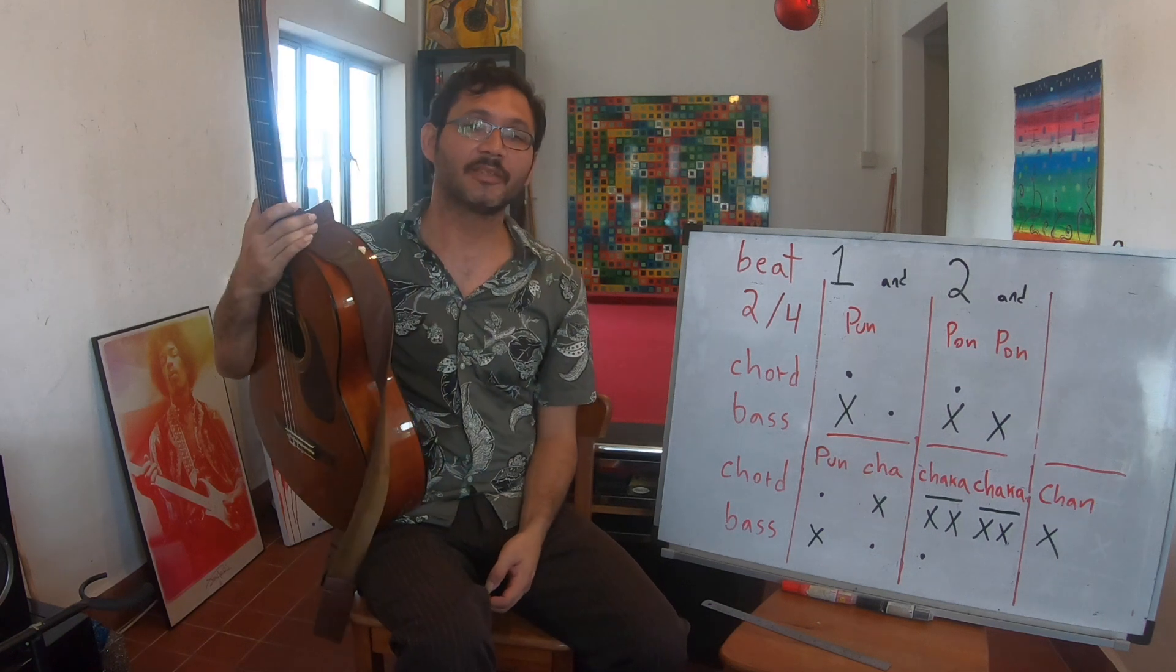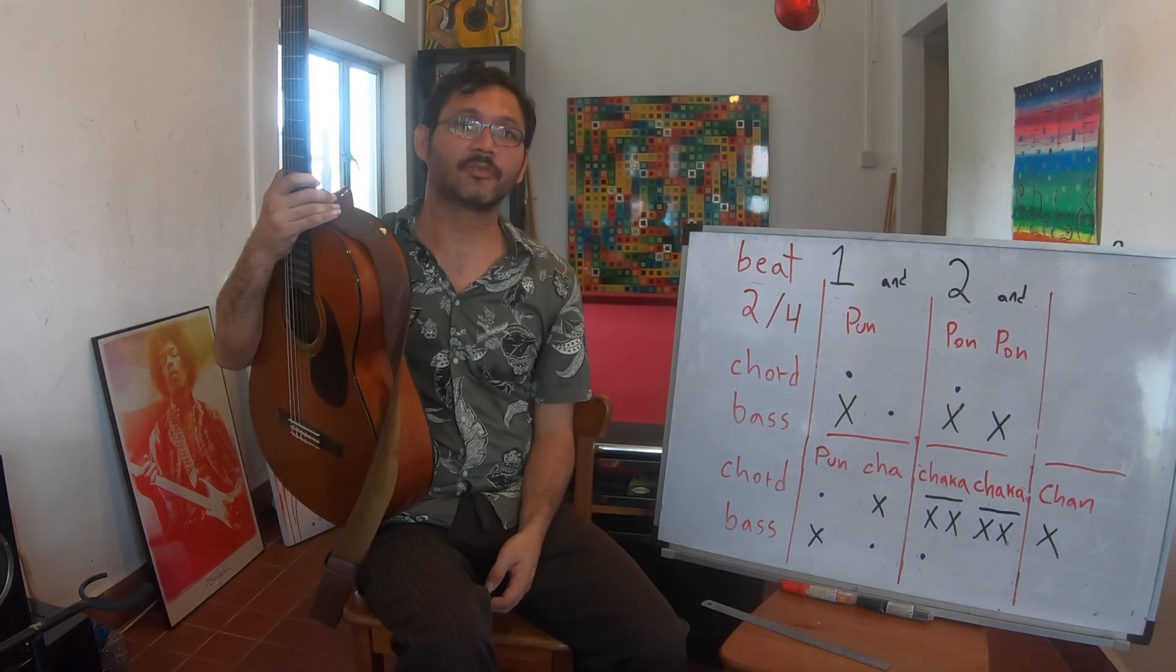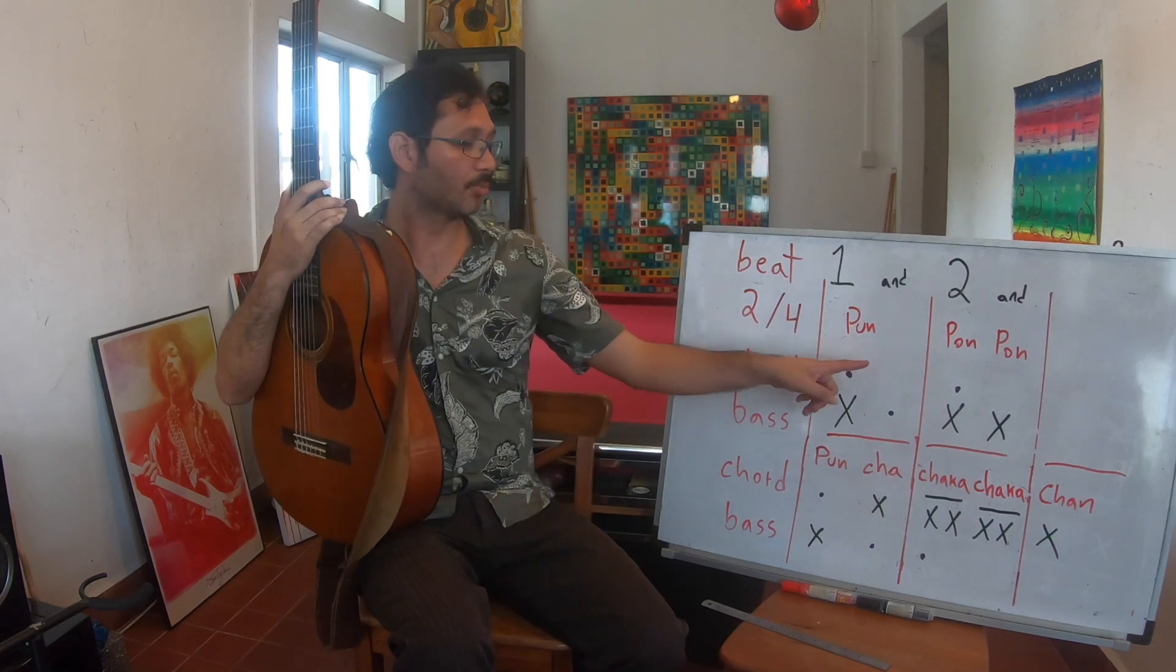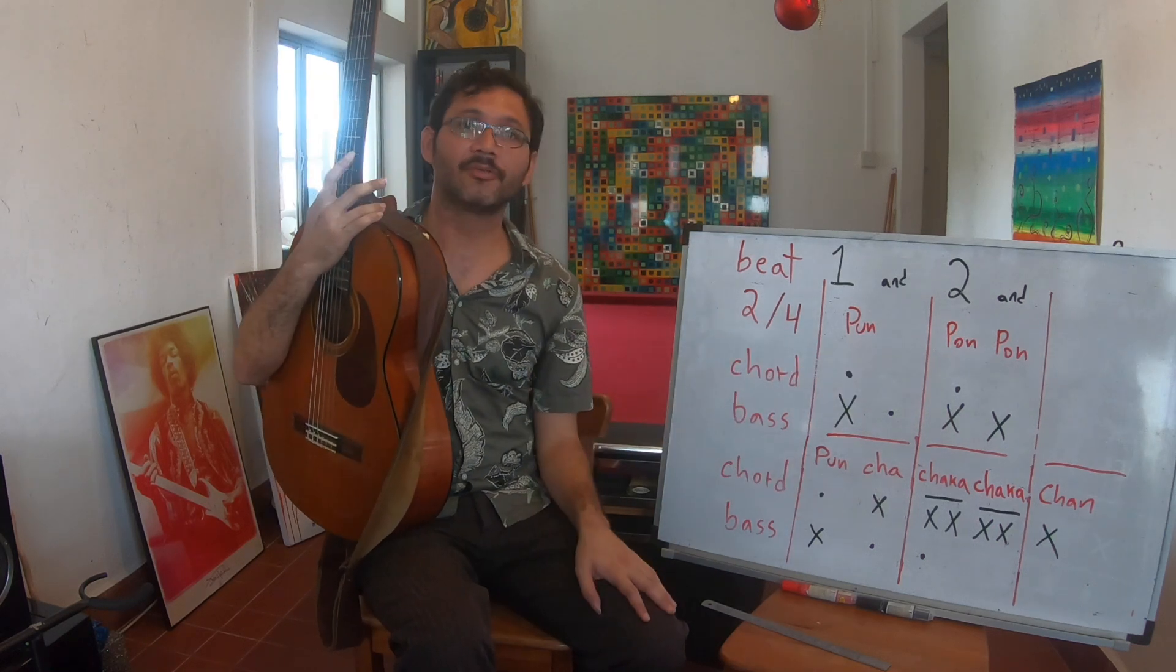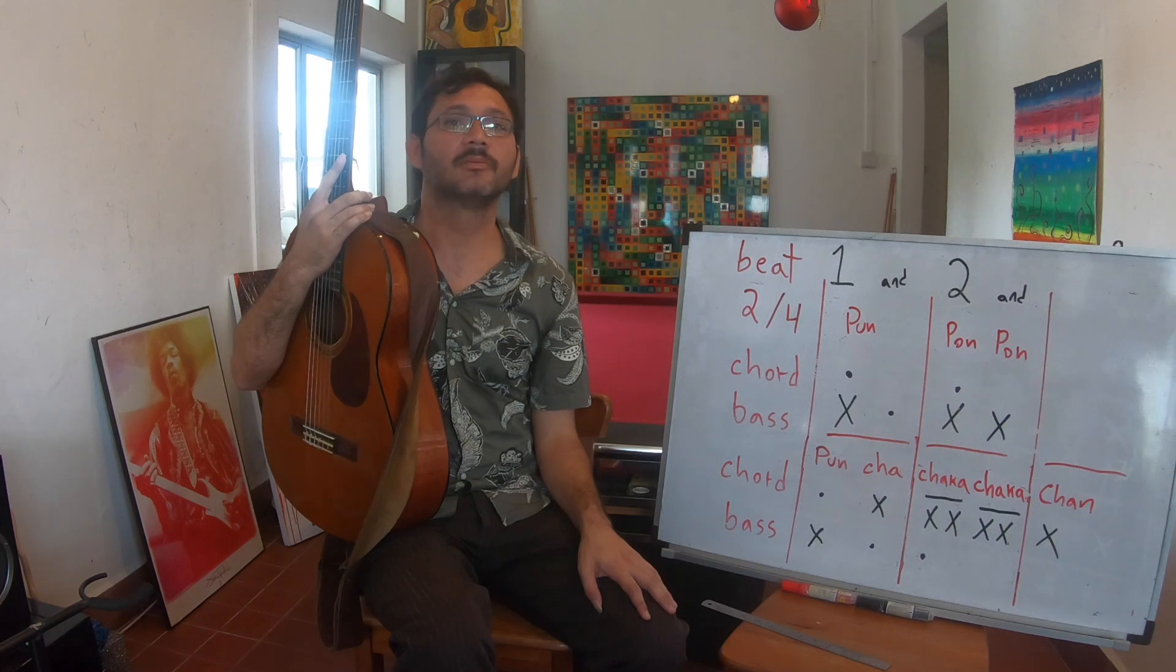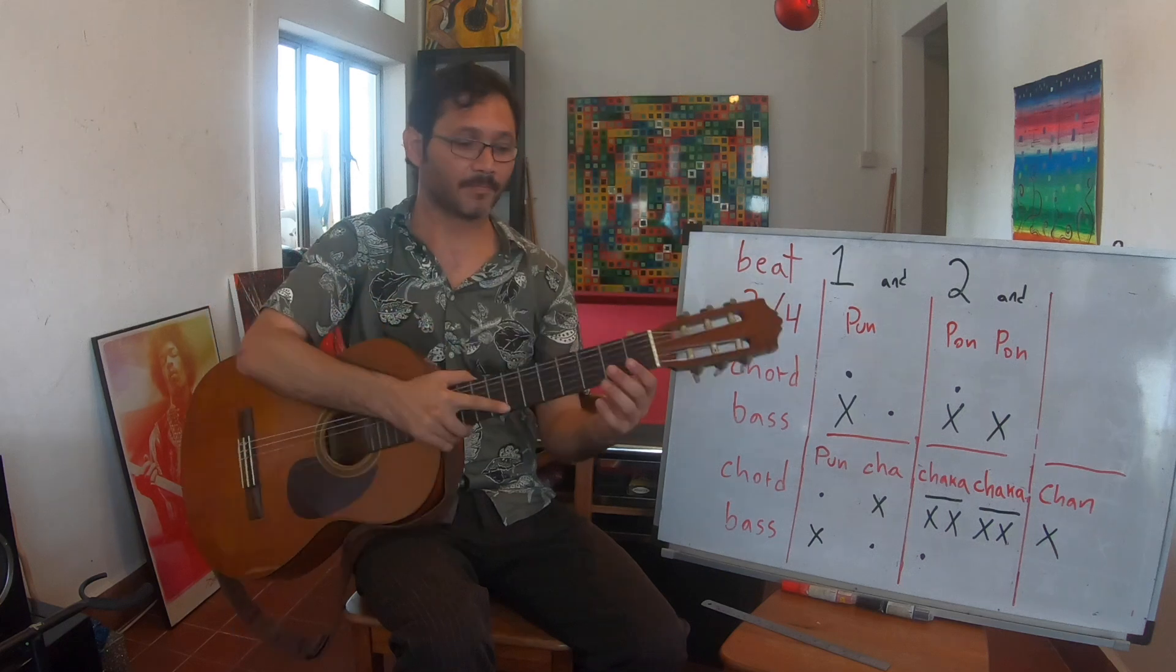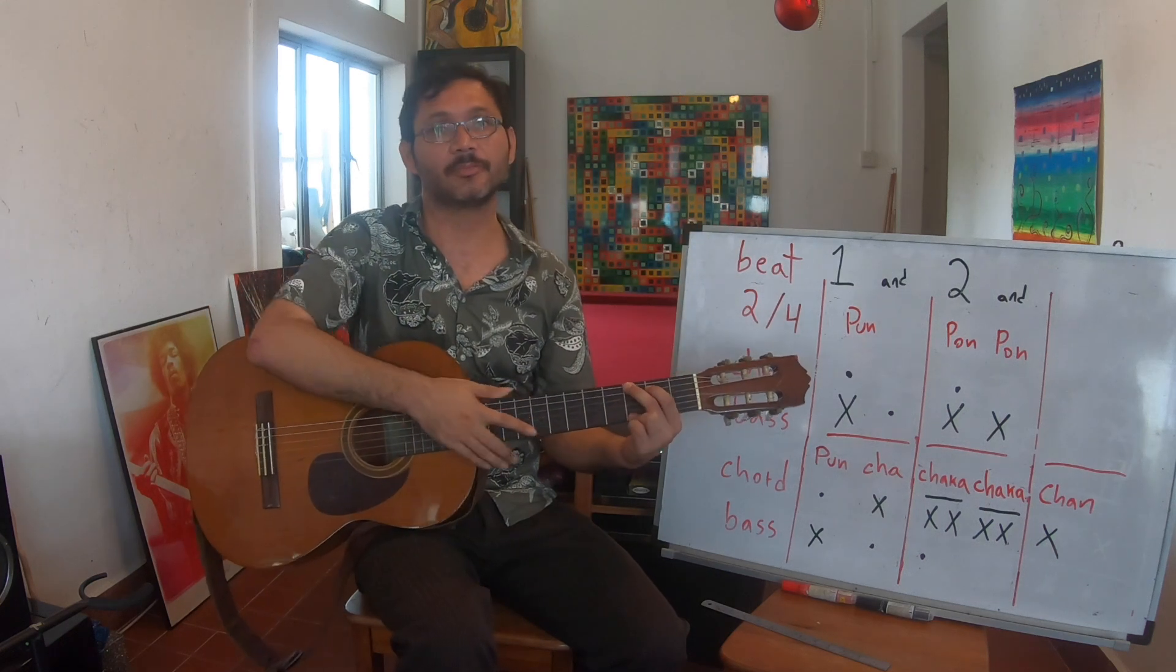Now we will do a fragment of the song Sabado Distrito Federal from Los Almacenes. We will use both variations and also we will switch our core technique, playing with downstrokes when we reach the D7 and G progression.